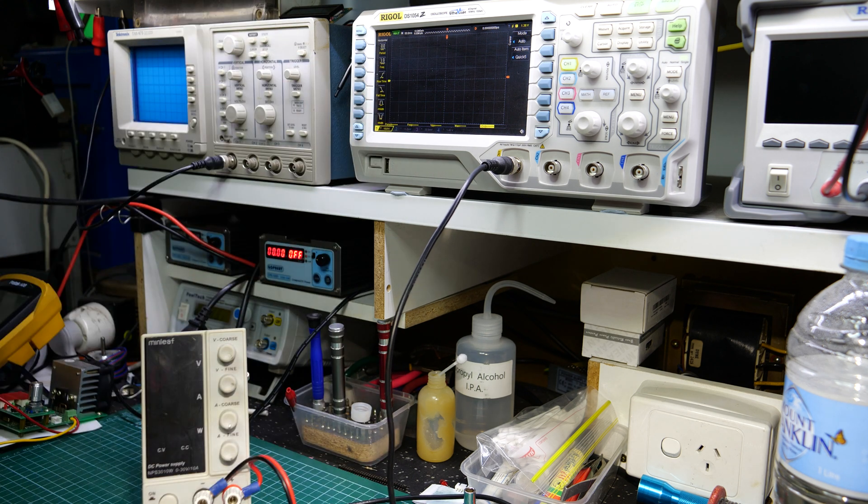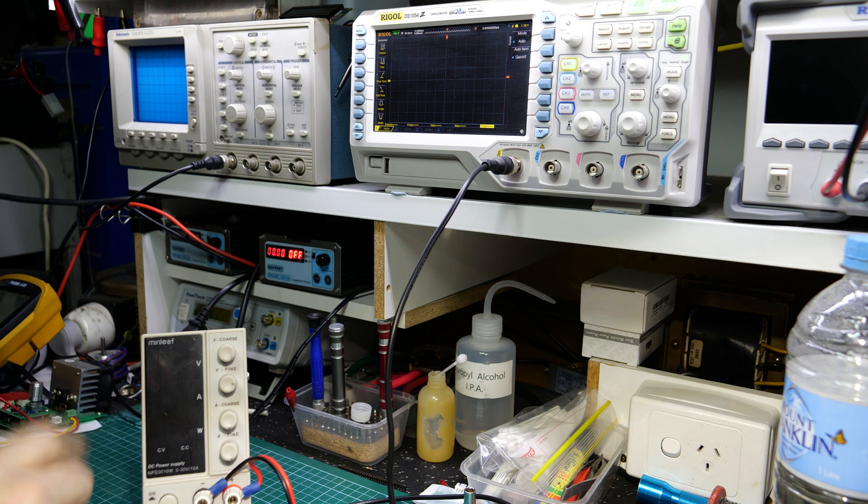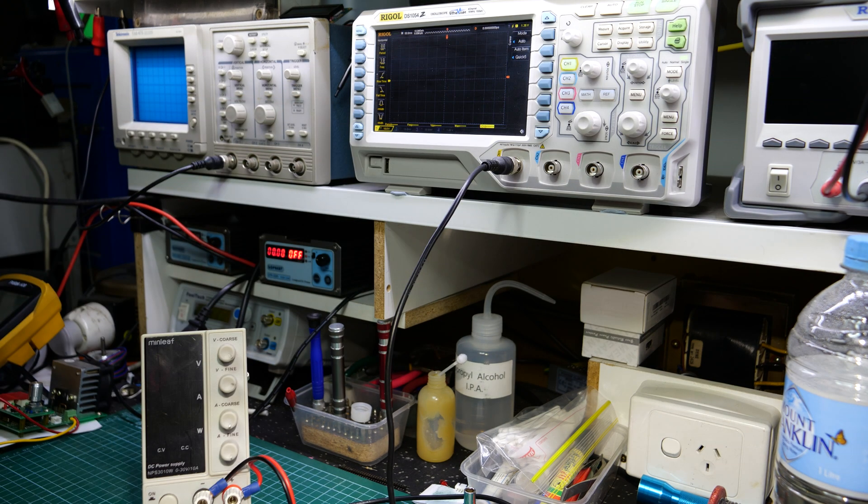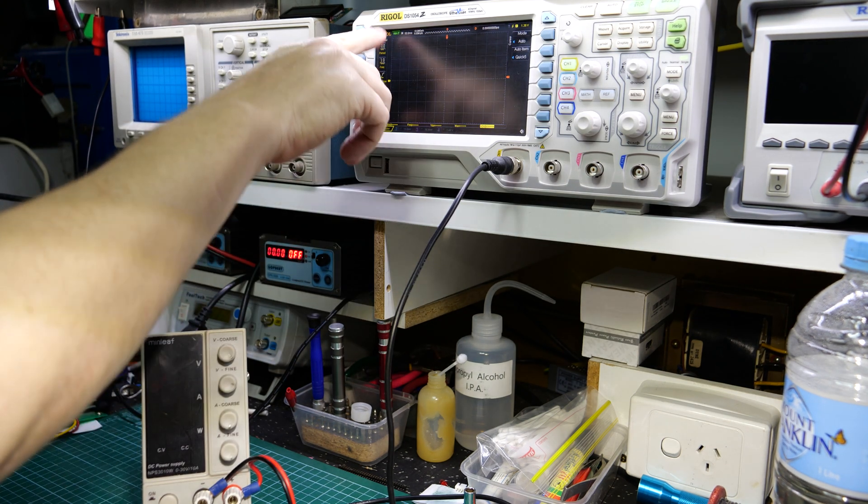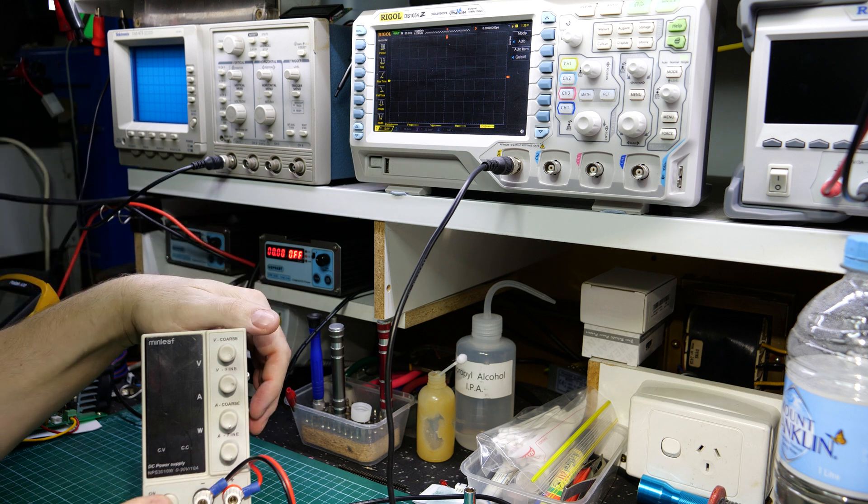We're doing it under no load because if we're testing overshoot under load we may skew the results. Given the caliber or pricing of this unit I'm not expecting great results but we'll see what we can find out and whether or not it's safe to use for your main device on/off. We've got our single shot on our oscilloscope, 10 volts per division and a time scale of 50 milliseconds.